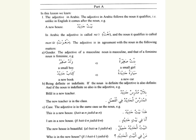Now let's look at a feminine example. If we want to say 'a small girl,' we say Bintun Sahiratun. Or if we want to say 'a new car,' we say Sayyaratun Jadiditun.